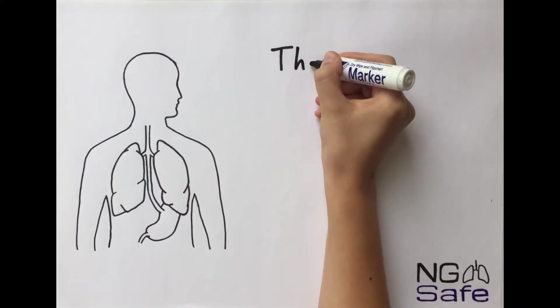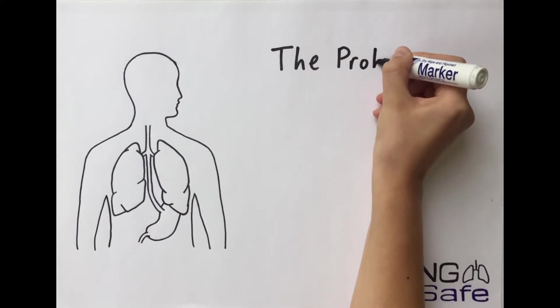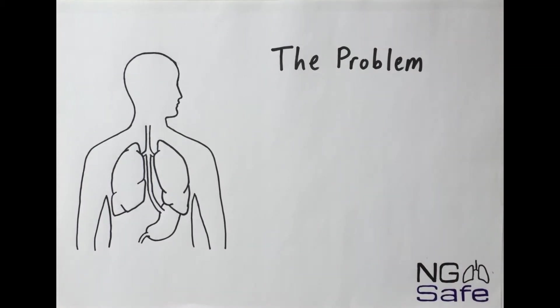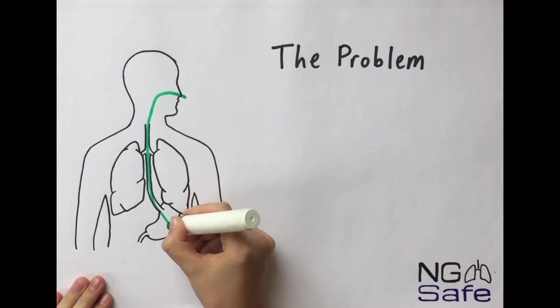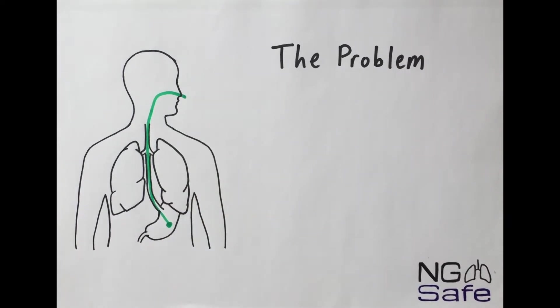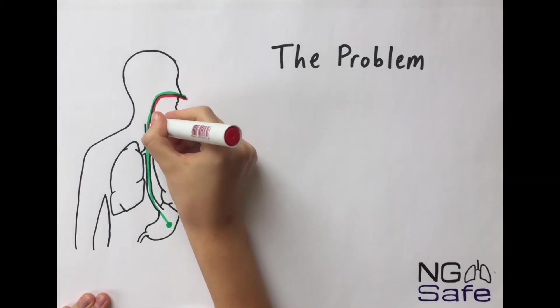Nasogastric feeding tubes are an essential part of critical care management. These tubes are guided into a patient's stomach but can often be misplaced or become dislodged and end up in the lung.